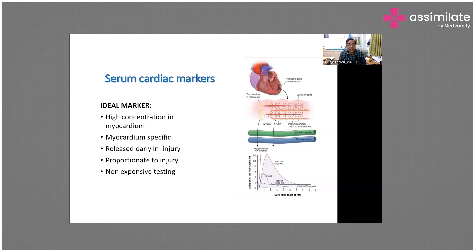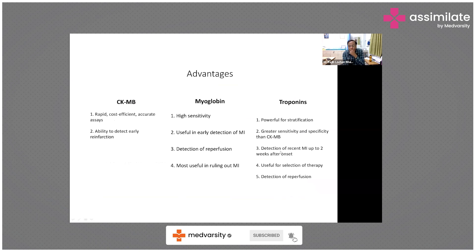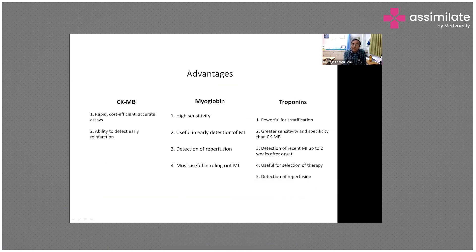Serum cardiac markers — the ideal marker should be in high concentration in the myocardium, be myocardium-specific, released early in injury, proportionate to the degree of injury, and inexpensive to test. Of the three main markers — CKMB, myoglobin, and troponin — troponin is the most important. It offers powerful risk stratification, with greater sensitivity and specificity than CKMB. It allows detection of recent MI up to two weeks after onset and is useful for selection of therapy.